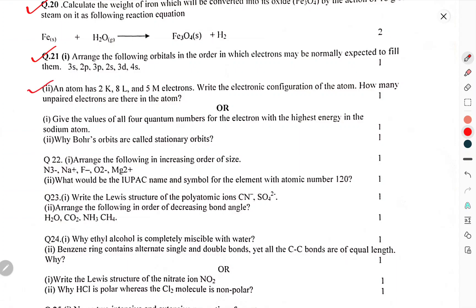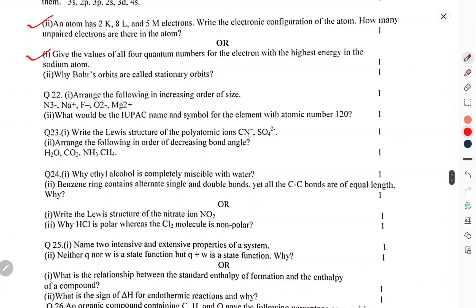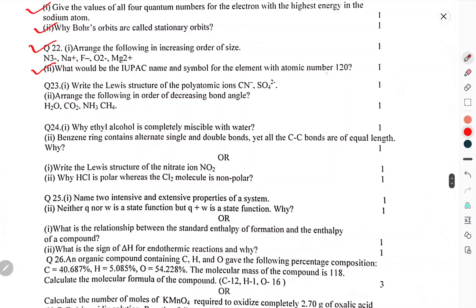An atom has 2, 8, 5 electrons in K, L, M shells. Write the electronic configuration of the atom. How many unpaired electrons are there in the atom? Give the values of all four quantum numbers of the electron with the highest energy in the sodium atom. Why are both orbitals called stationary orbitals? Arrange the following in increasing order of size. What would be the IUPAC name and symbol of the element with atomic number 120? Write the Lewis structure for the polyatomic ions Cl- and SO4 2-.